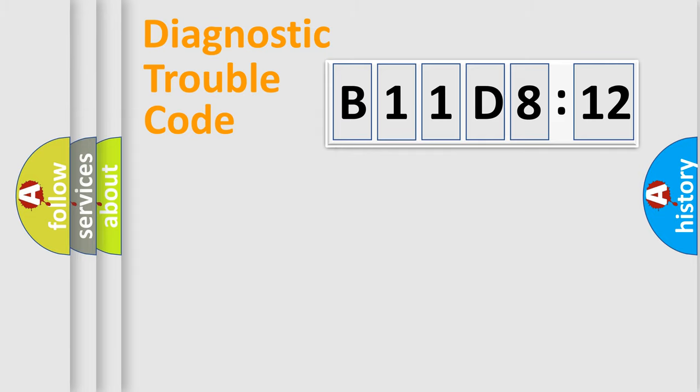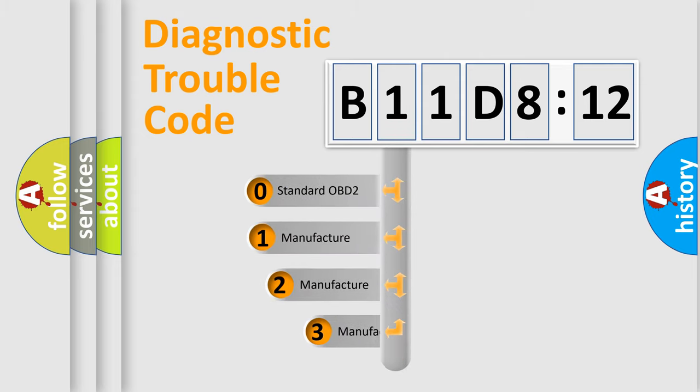Powertrain, Body, Chassis, and Network. This distribution is defined in the first character code.